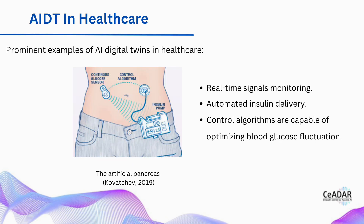Another fantastic example is the artificial pancreas created by Kovacev and the team in 2019. The model simulates the action of the human metabolic system and uses readily available real-time signals, like continuous glucose monitoring, to automate insulin delivery with a control algorithm that optimizes blood glucose conditions in the patient's natural environment. The transition of the artificial pancreas to everyday clinical use is occurring, similarly working with devices that patients use in their digital therapeutic ecosystem.